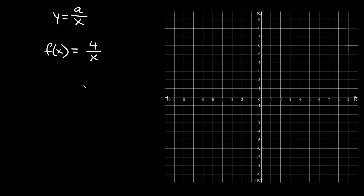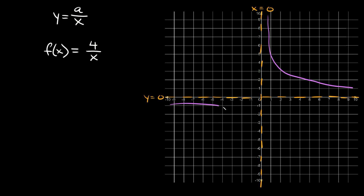If it's ever in this form, your asymptotes are always going to be in the exact same spot. They're always going to be along the y-axis — so x is equal to 0 — and also along the x-axis at y is equal to 0. When you graph a rational function, the graph looks something like this; there's basically two parts to it.